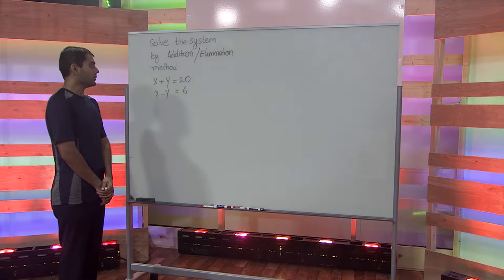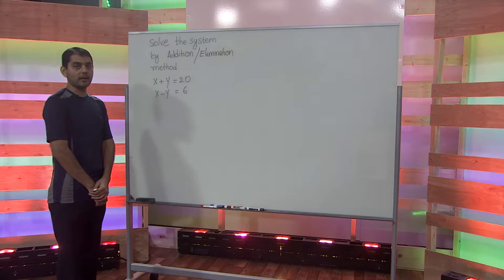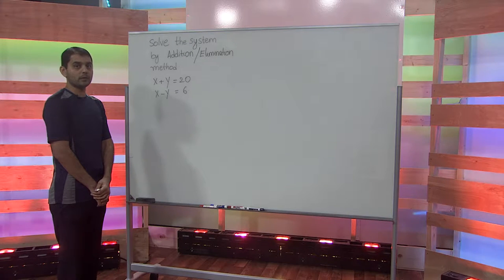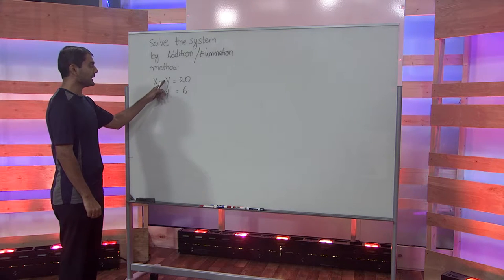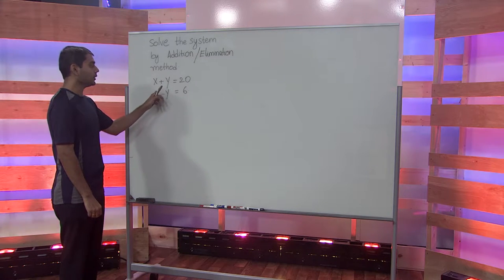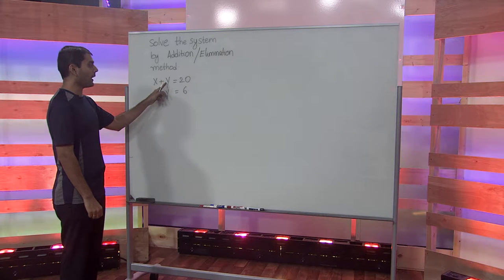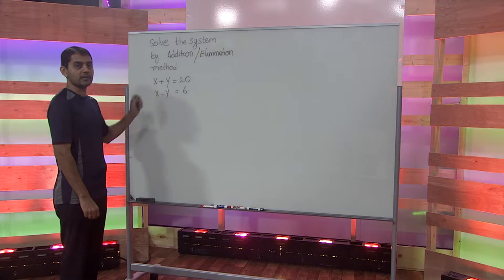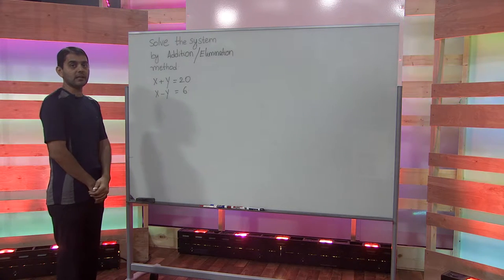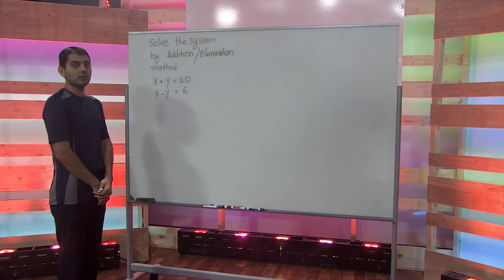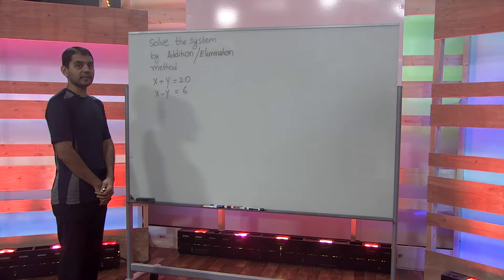To execute the elimination method, we want the coefficients of the variables to be opposite to one another. As we can see in this example, the coefficient of y is one in the first equation and negative one in the second equation. So this is already set up in a very nice way.